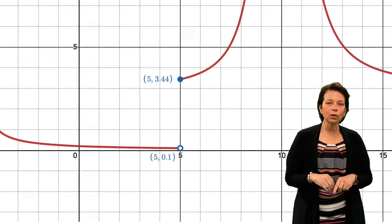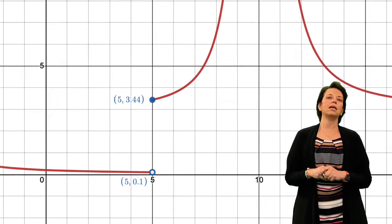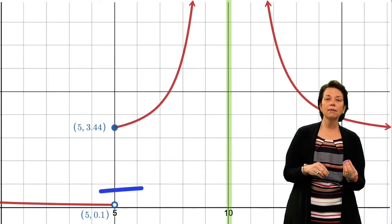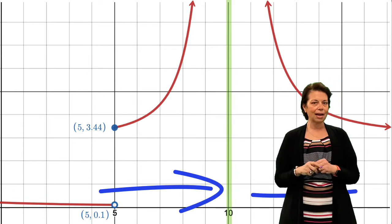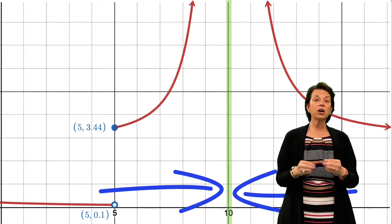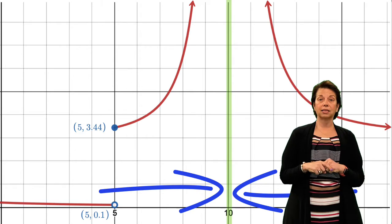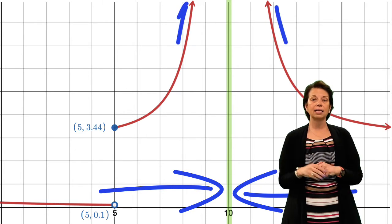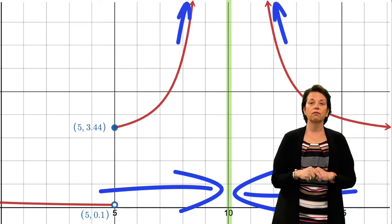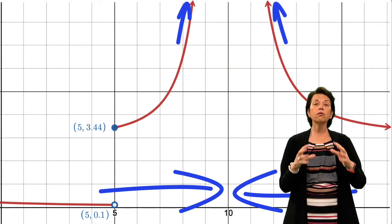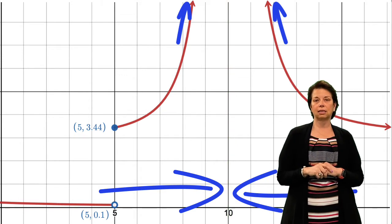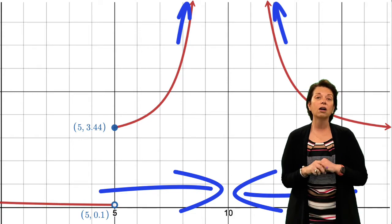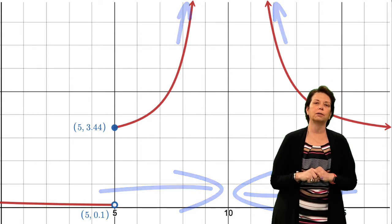Lastly, looking at x = 10, we see that as I get closer and closer to 10 on both the left-hand side and the right-hand side, the function values are approaching positive infinity. Since both the left and the right-hand sides are going to the same location, the limit does exist in this case.